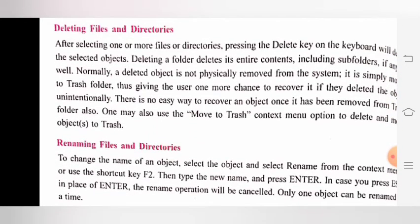Next is deleting files and directories. After selecting one or more files or directories, pressing the Delete key on the keyboard will delete the selected objects. Deleting a folder deletes its entire content including subfolders, if any. Normally a deleted object is not physically removed from the system — it is simply moved to the Trash folder, giving the user one more chance to recover it if they deleted the object unintentionally. There is no easy way to recover an object once it has been removed from the Trash folder. One may also use the 'Move to Trash' context menu option to move objects to Trash.